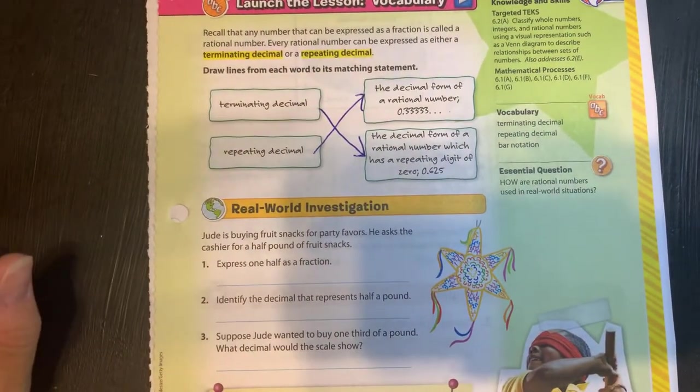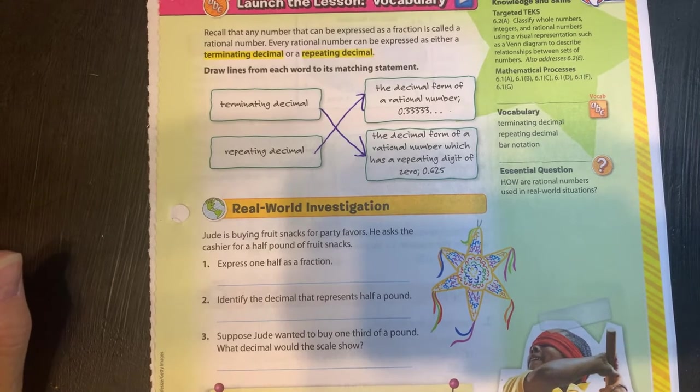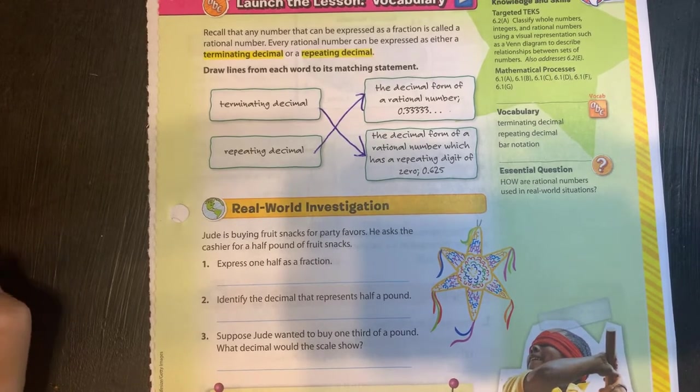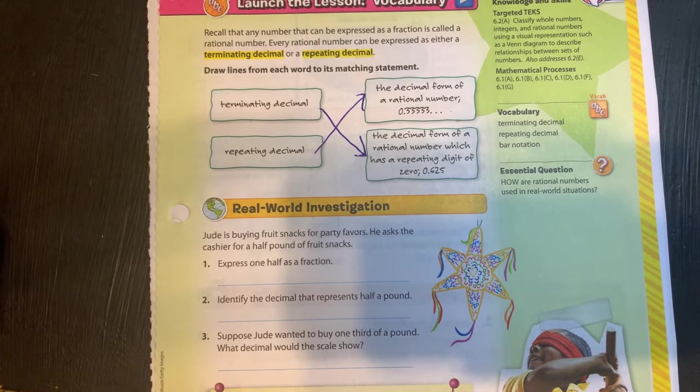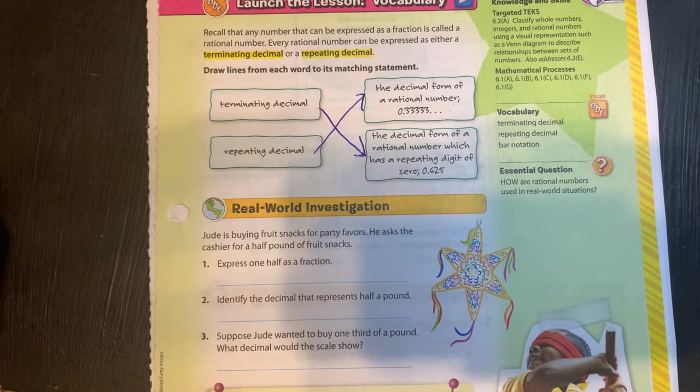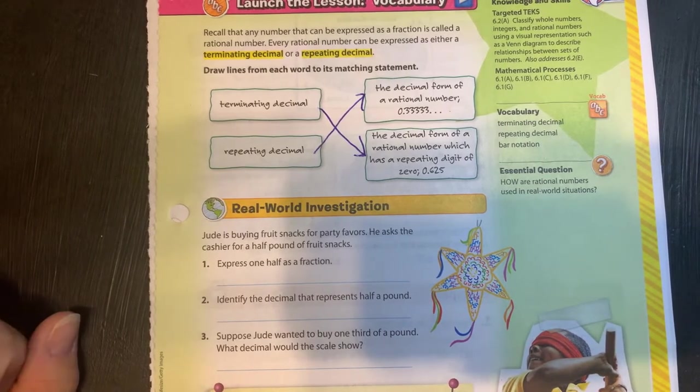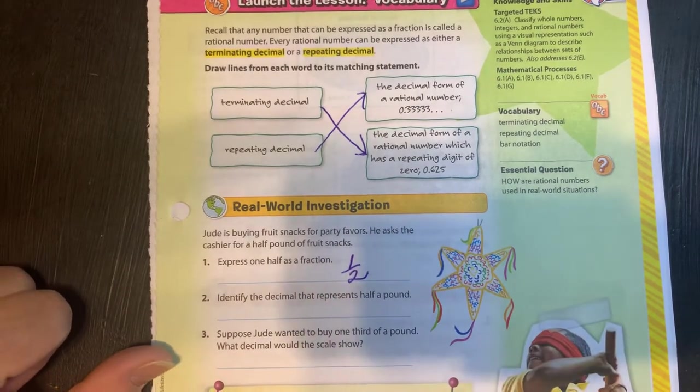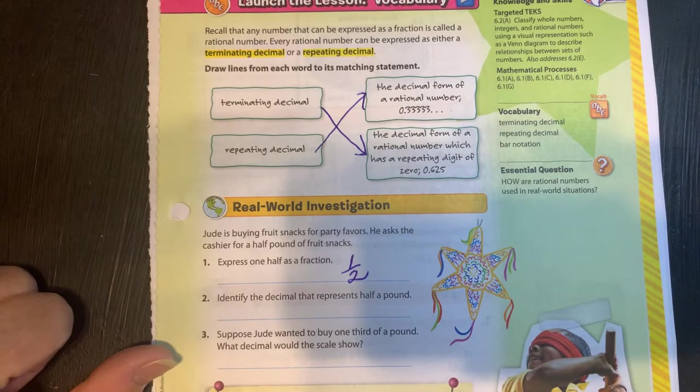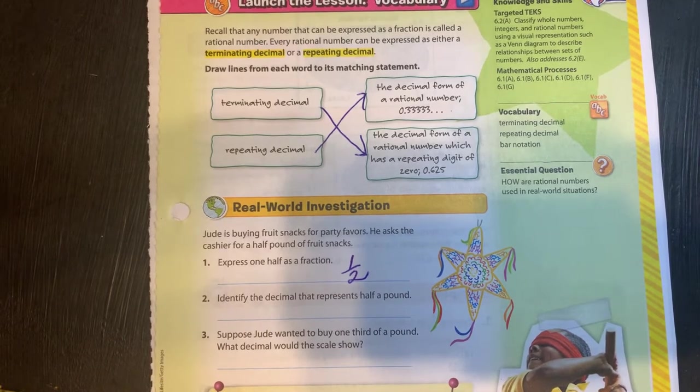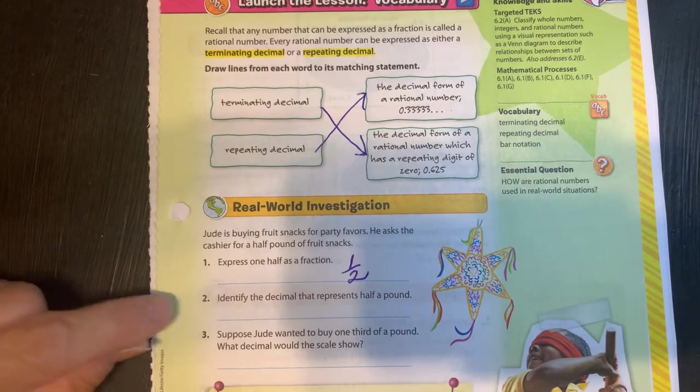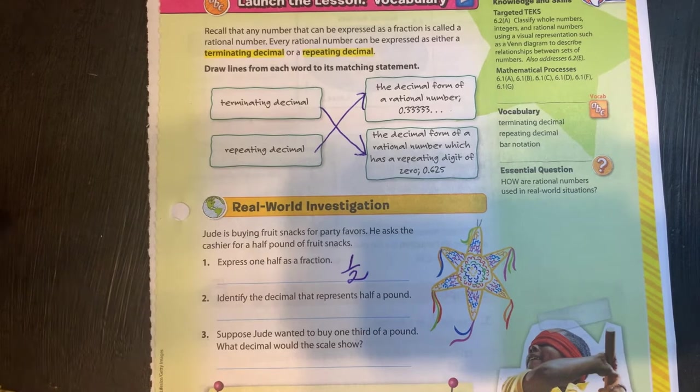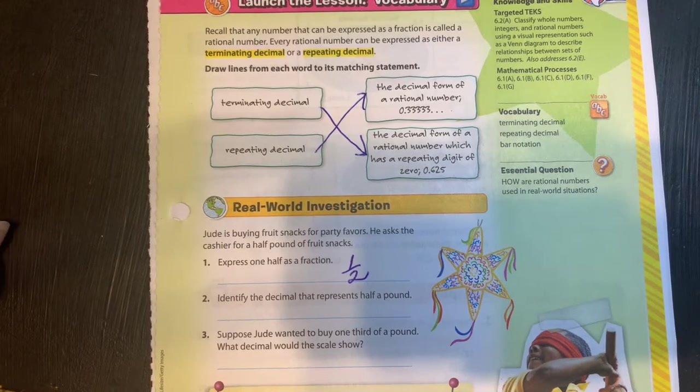It says Jude is buying fruit snacks for party favors. He asked the cashier for a half pound of fruit snacks. Express one half as a fraction. Okay. One half is a fraction like that, right? Because it's one part out of two, two being the whole thing. Number two, identify the decimal that represents half a pound.